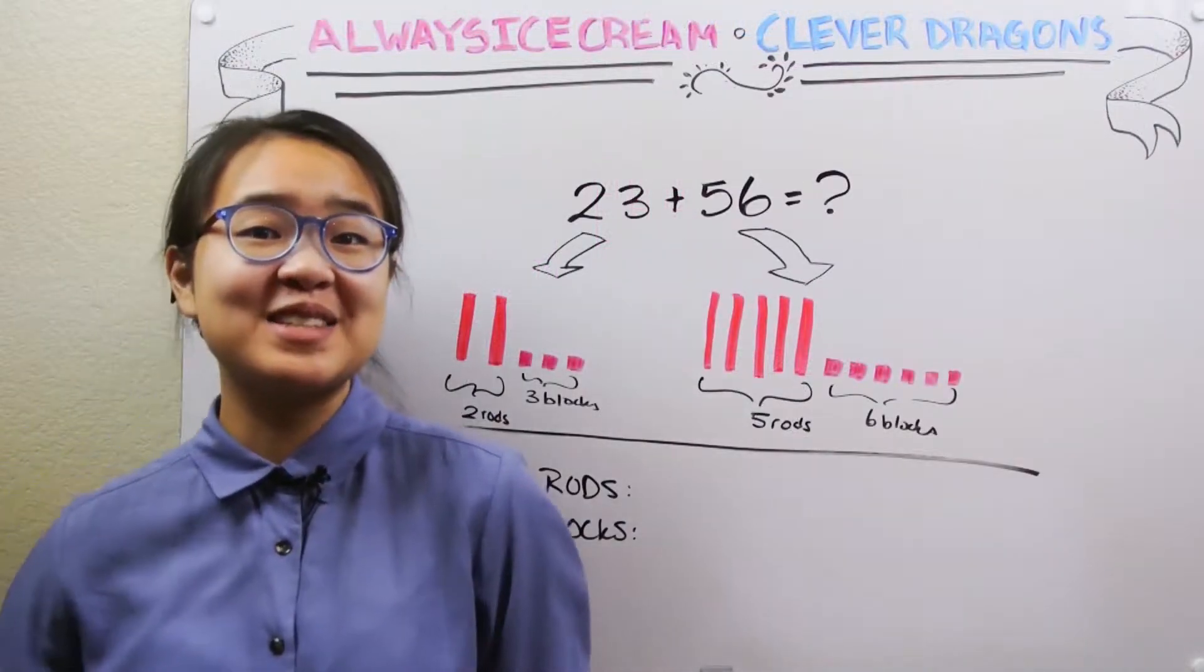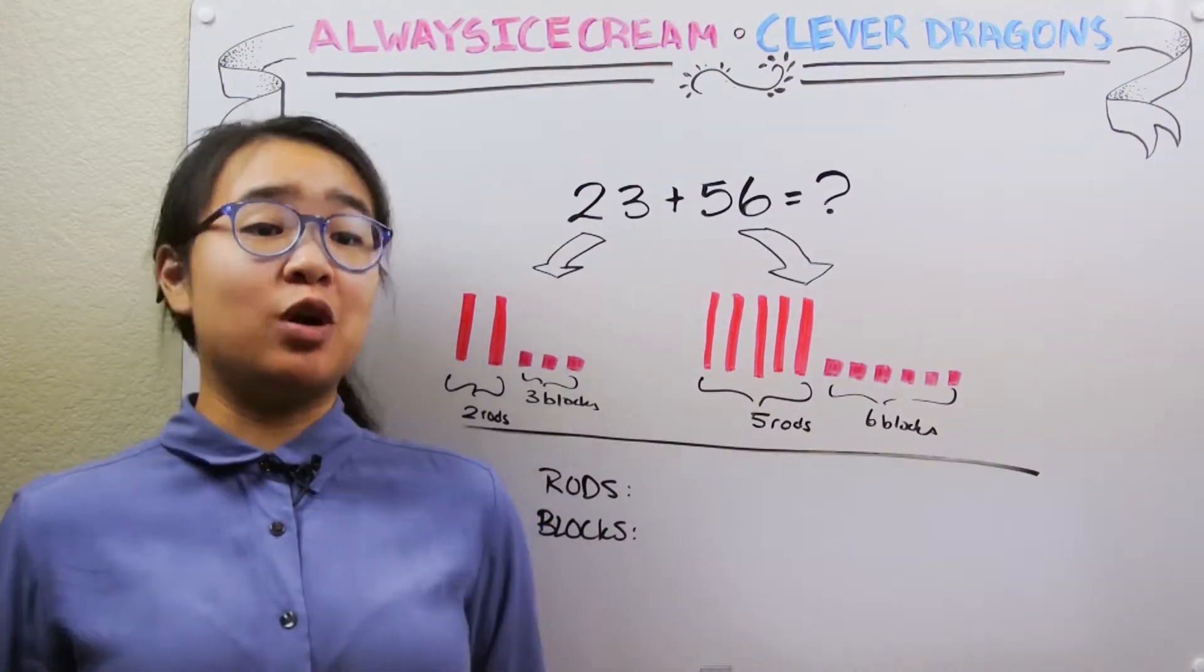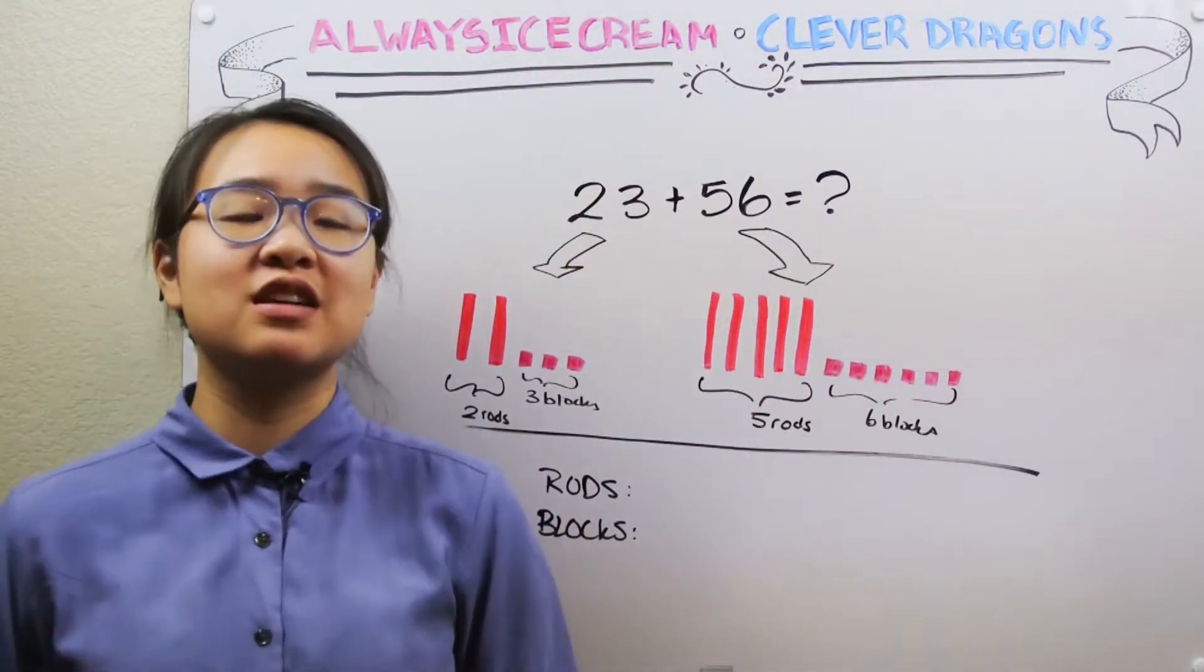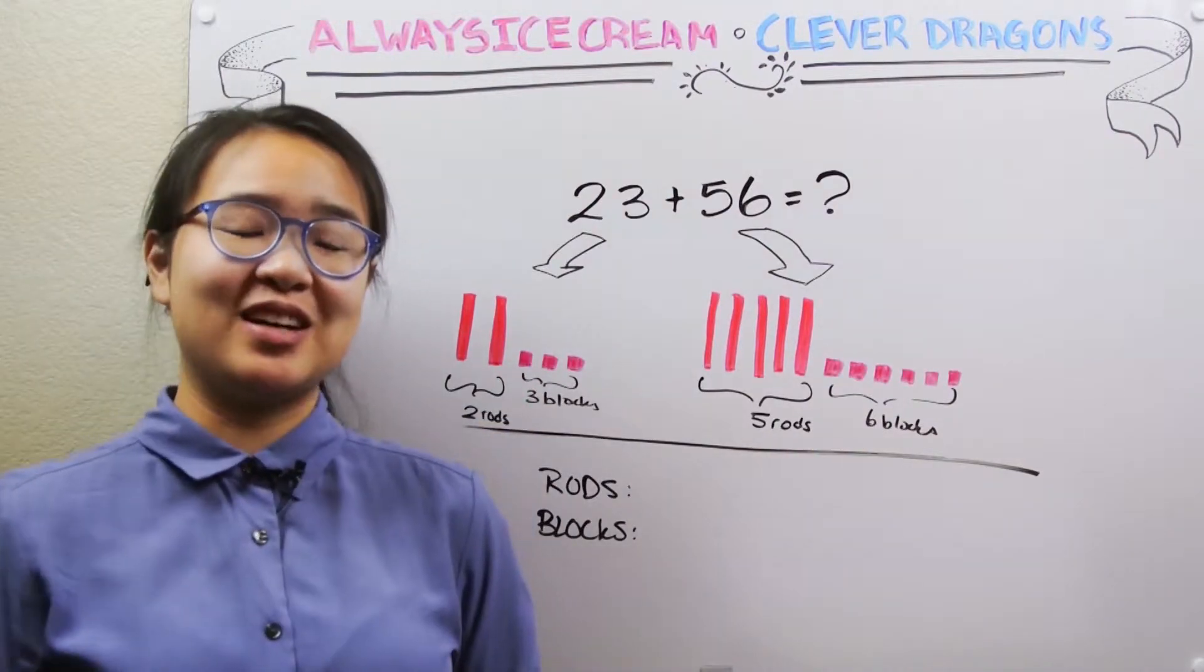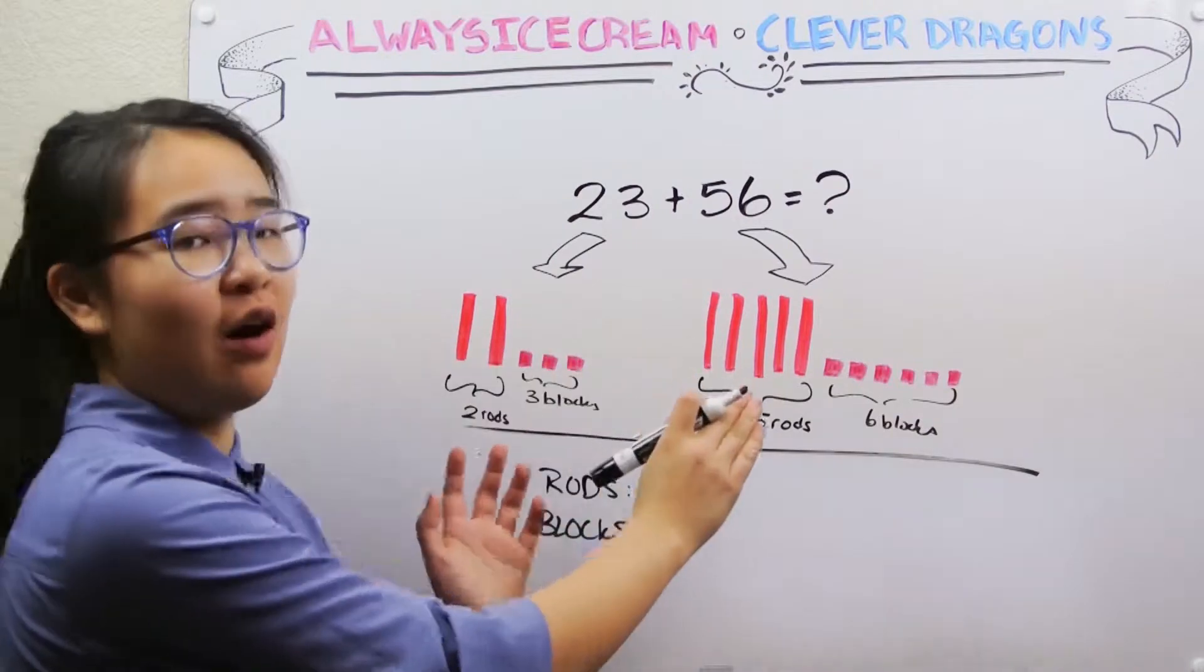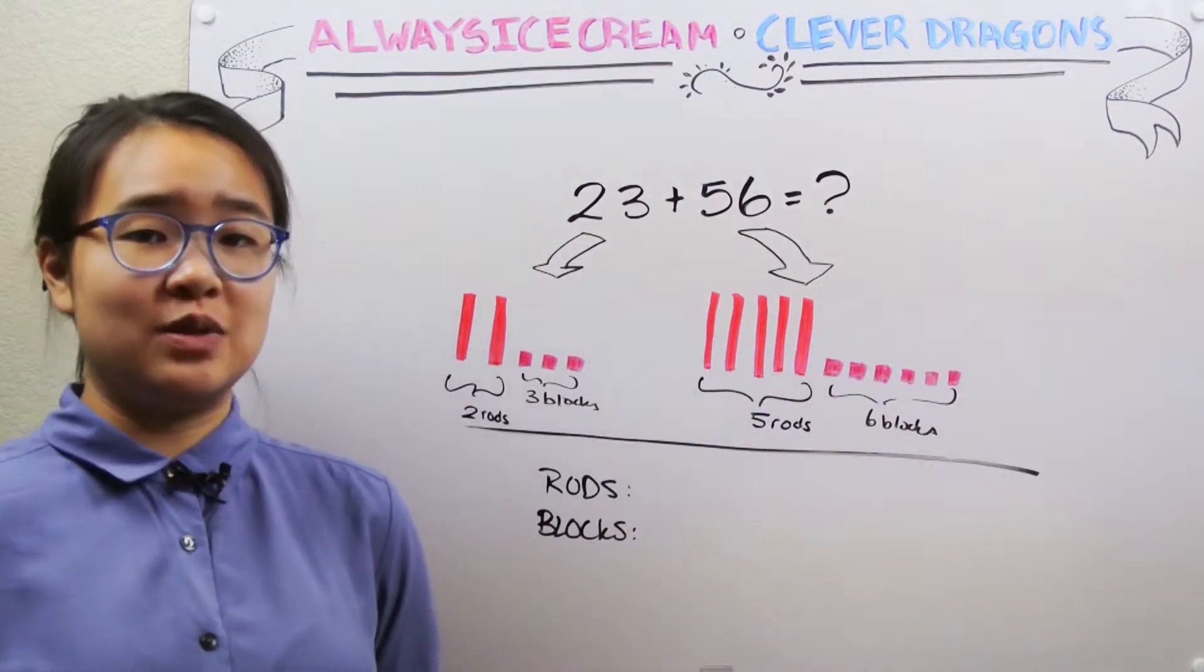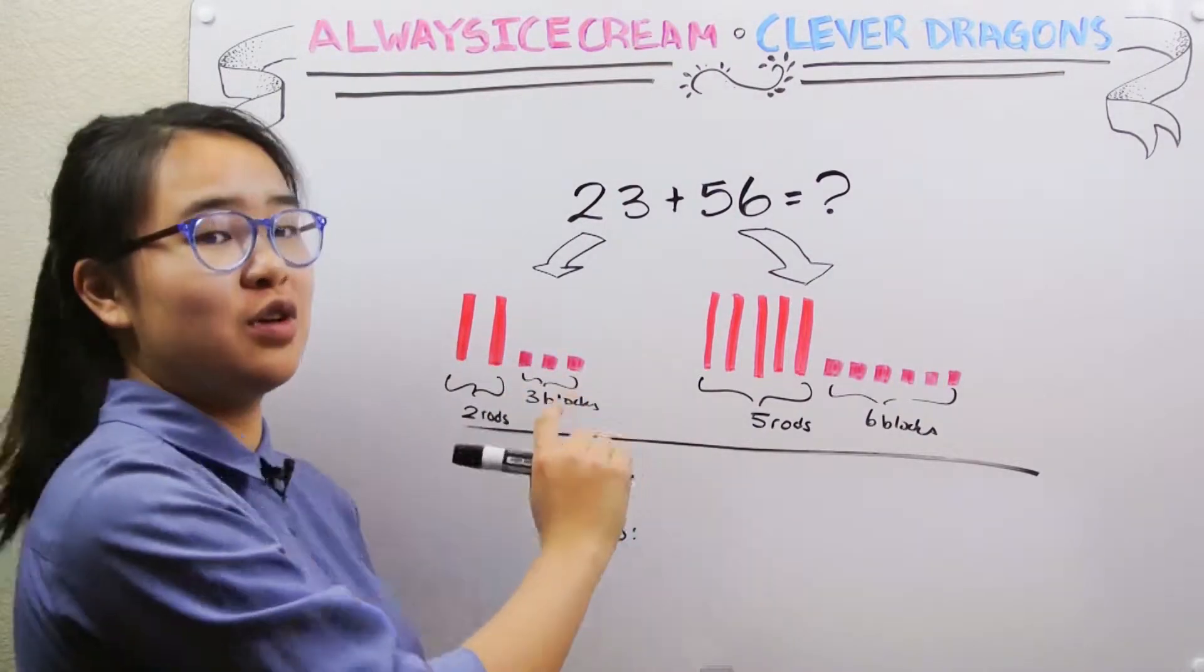So how does any of this relate back to addition? Well, let's rewind back to our original problem of 23 plus 56 and visualize both of these numbers as rods and unit blocks. One thing that might jump out at you is, instead of counting all of them up as units as we did in our previous video, we could just count the number of rods and the number of unit blocks.